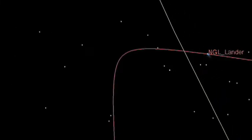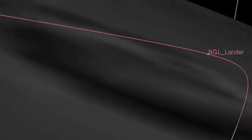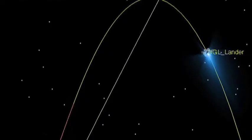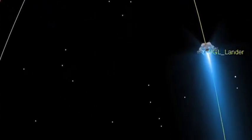After jettisoning the first descent stage, the NGL Lander continued braking with its own thrusters. At an altitude of 1 kilometer, the NGL Lander began looking for a landing spot clear of craters and large debris. It looks like the NGL Lander has found a good sight and is about to land.